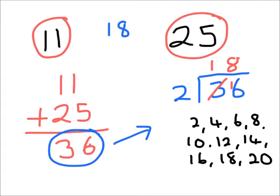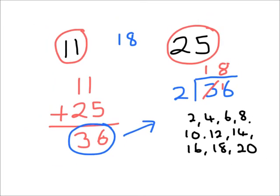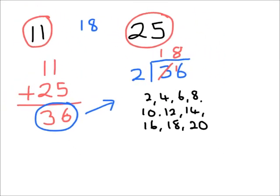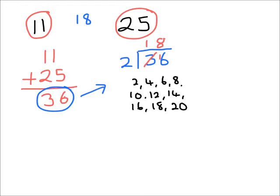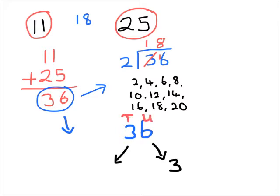Now the second way I could have halved the number — the second way I could have halved thirty-six — was by partitioning. I could have taken each of the digits and halved it. What's half of six? Three. What's half of thirty? Now that three is thirty — it's very important to remember that's three tens. Half of thirty is fifteen. And I could add those two numbers: fifteen and three gives me eighteen.